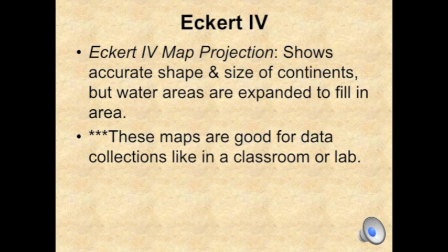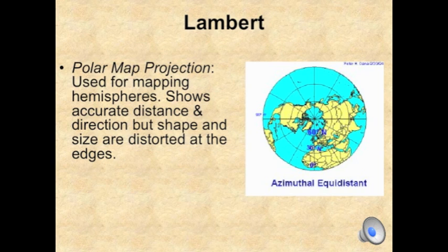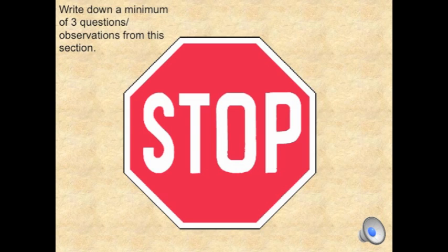The last one is the Lambert projection. That is the one type of map we don't have, per se — though part of one of the maps here does have a Lambert projection on both sides. It's used for mapping the hemispheres and shows accurate distance, but shape and size are distorted at the edges. It's basically showing you from above the poles. Make sure you fill out the Google Doc or bring questions with you to class tomorrow. Have a great day.